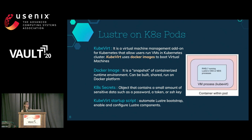When we were trying to set up that architecture, we realized that Lustre needs kernel patching, which was an issue. To solve that, we used KubeVirt. What KubeVirt does is allow running VMs inside Kubernetes clusters — it uses a Docker image to spin up a virtual machine. We used Kubernetes Secrets for storing our KubeVirt startup script.